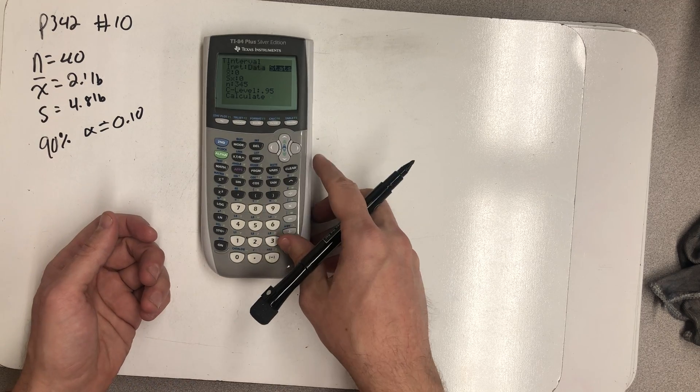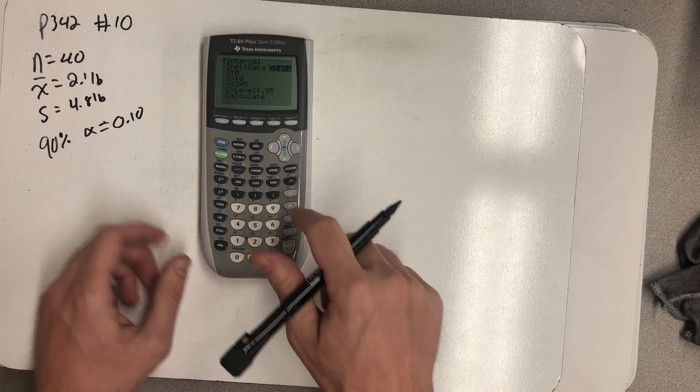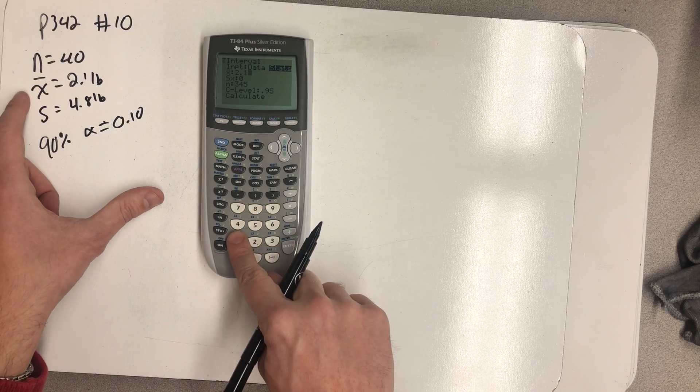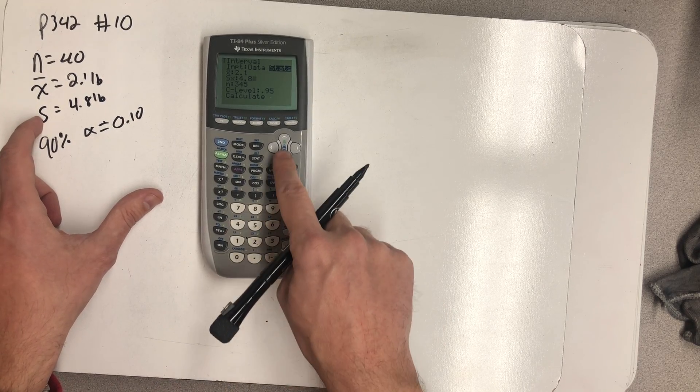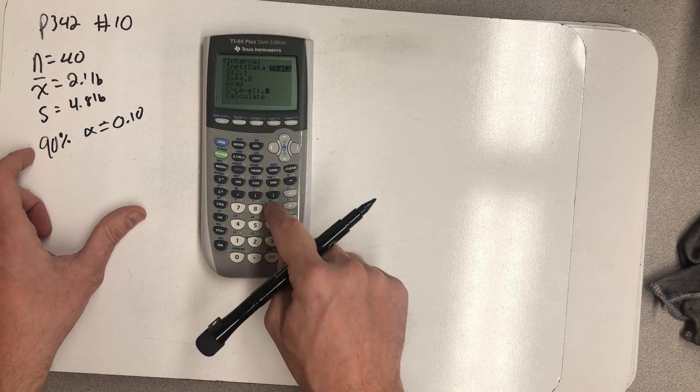We have summary statistics here rather than the actual data. The mean, 2.1 pounds. The standard deviation, 4.8 pounds, sample size of 40, and a confidence level of 0.9.